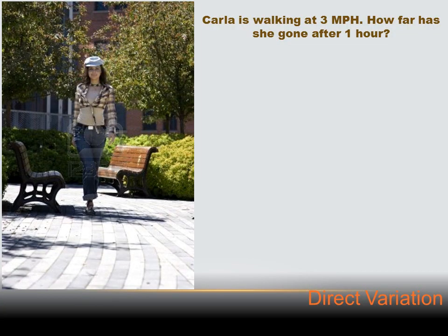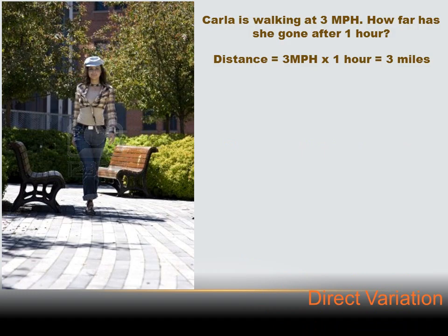Today we're going to talk about direct variation. Direct variation just means you've got an expression where the variables grow proportionately, or the size of the variables changes in a direct fashion. Let's go through an example. Carla is walking at three miles per hour. How far has she gone after one hour? Well, that's easy. Her distance equals her speed, three miles per hour, times the amount of time she's walking. Three miles per hour times one hour equals three miles.